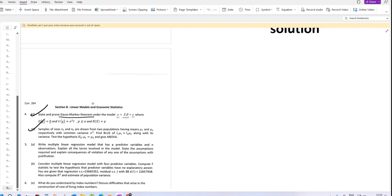Samples of N1 and N2 are drawn from two populations having mu 1 and mu 2 respectively, common variance is sigma square. Find BLUE of L1 mu 1 plus L2 mu 2 along with its variance and test the hypothesis as well.